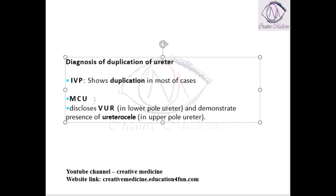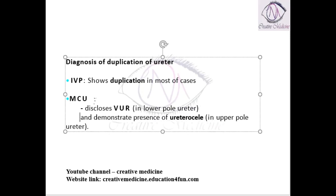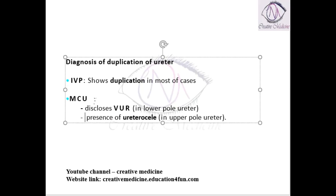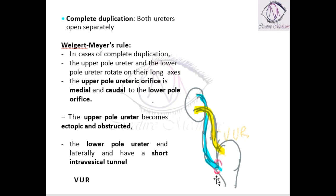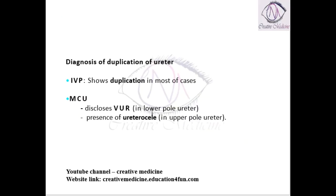If you do a micturating cystourethrogram, it will tell us about the vesicoureteric reflux which is present in the lower pole, and it will also demonstrate the presence of a ureterocele in the upper pole. So the lower pole of the ureter is associated with vesicoureteric reflux, whereas the upper pole is associated with ureterocele. These can be diagnosed with the help of micturating cystourethrography.